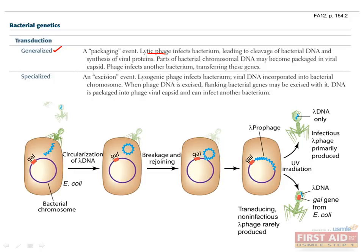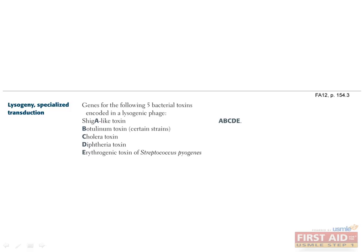This is a very efficient way for bacteria to pass antibiotic resistance. The genes for these five toxins are encoded within a lysogenic phage that can infect bacteria and induce a change through lysogenic conversion. In these examples, bacteria are non-toxic until they become infected with a lysogenic phage carrying the genetic code for the toxin. For example, Corynebacterium diphtheriae only produces diphtheria toxin after it has been infected with the phage carrying diphtheria genetic material.